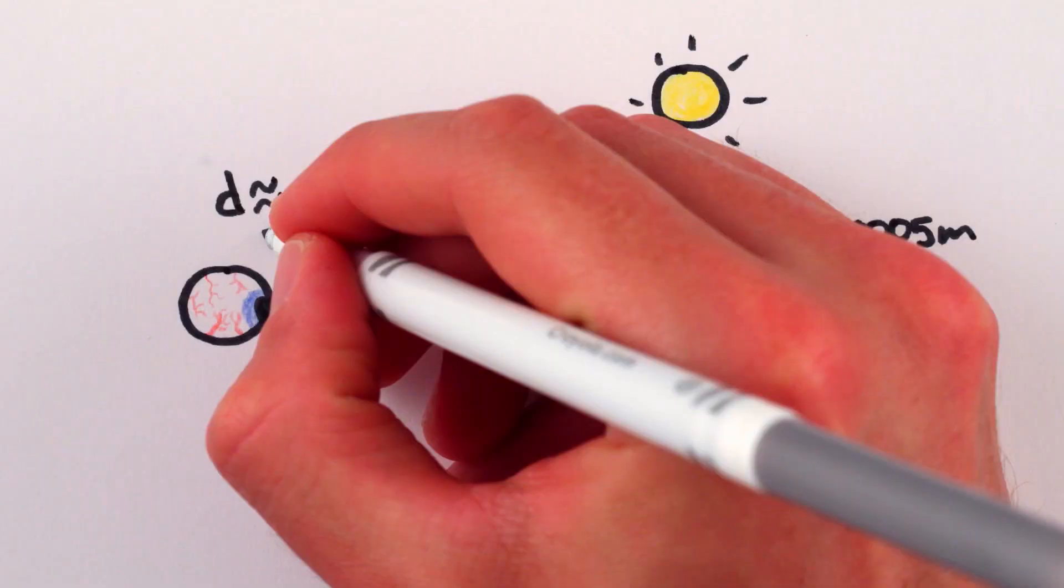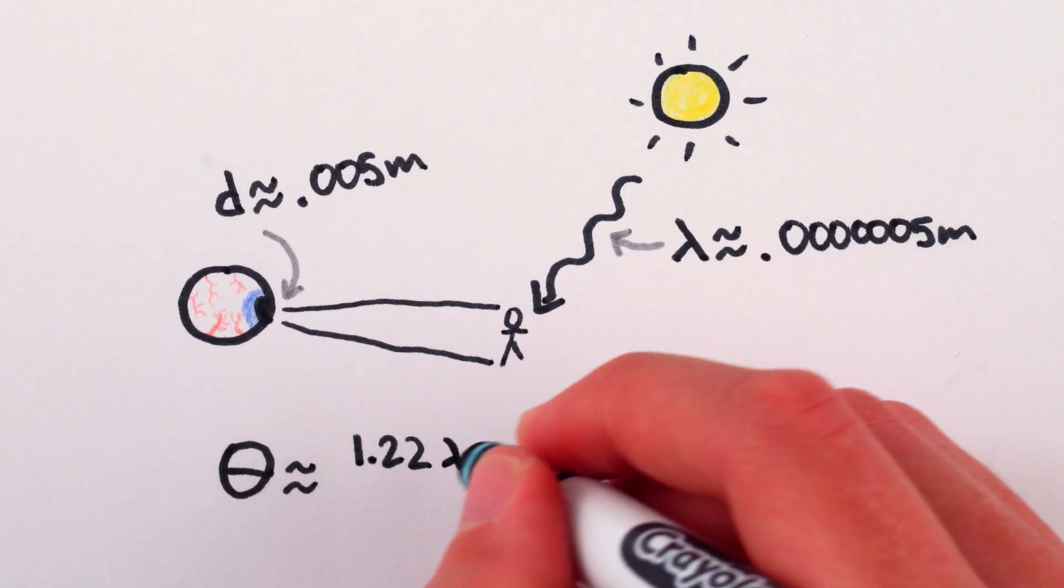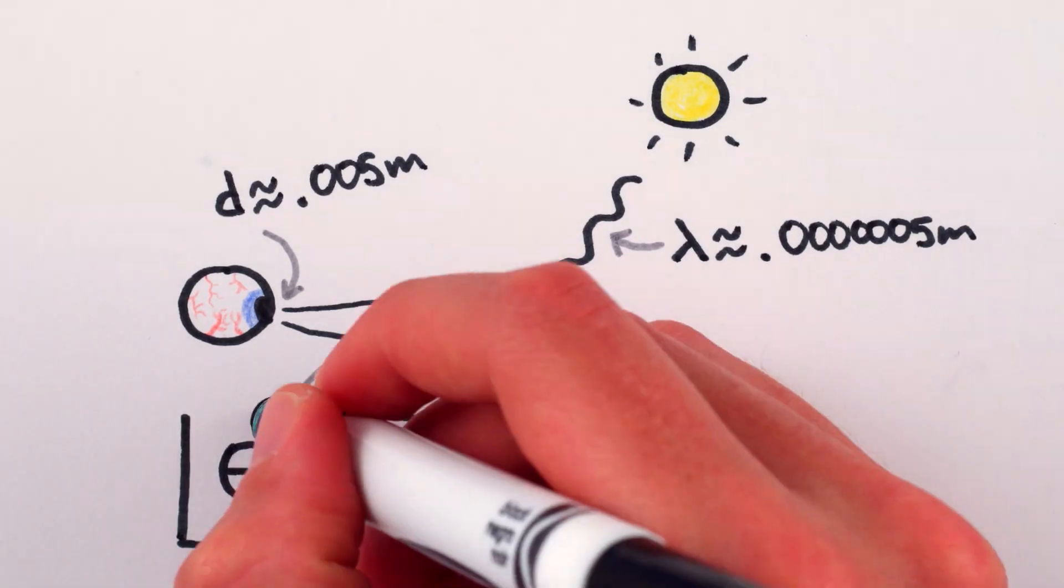So for visible sunlight and a human-sized pupil, diffraction limits us to at best be able to distinguish objects that are bigger than seven one-thousandths of a degree.